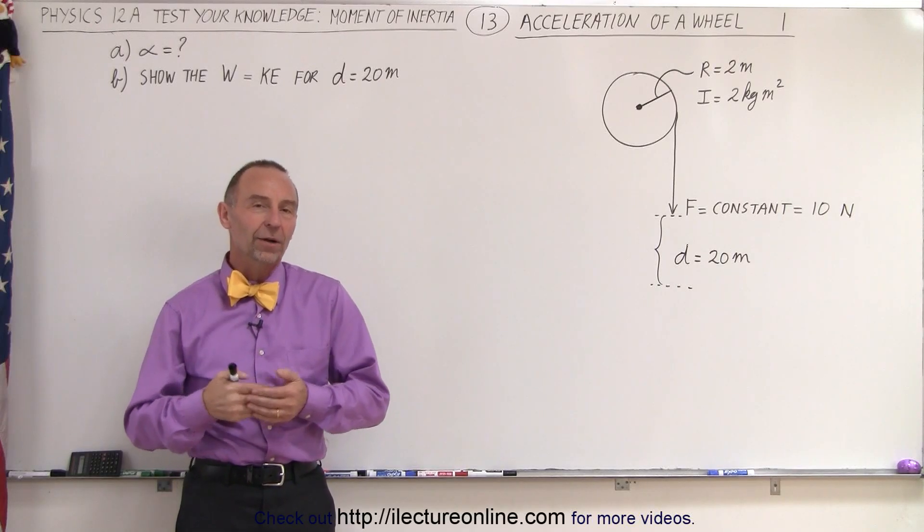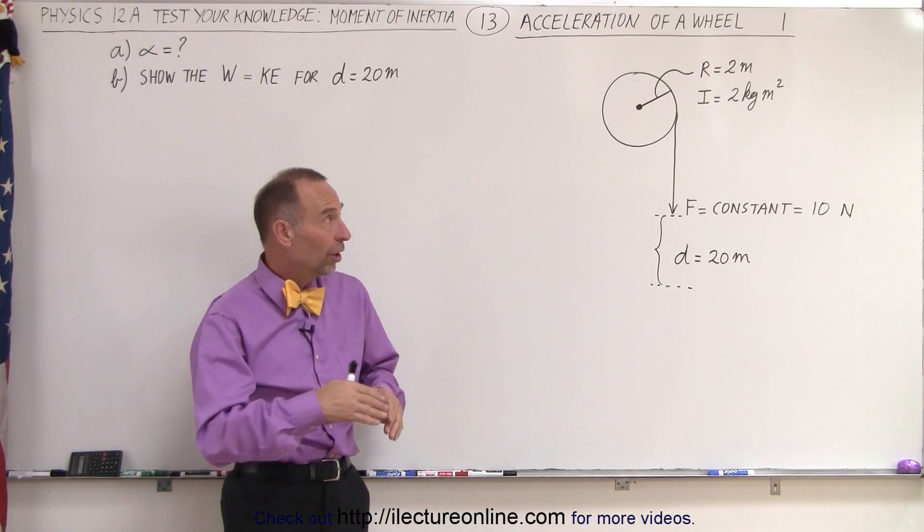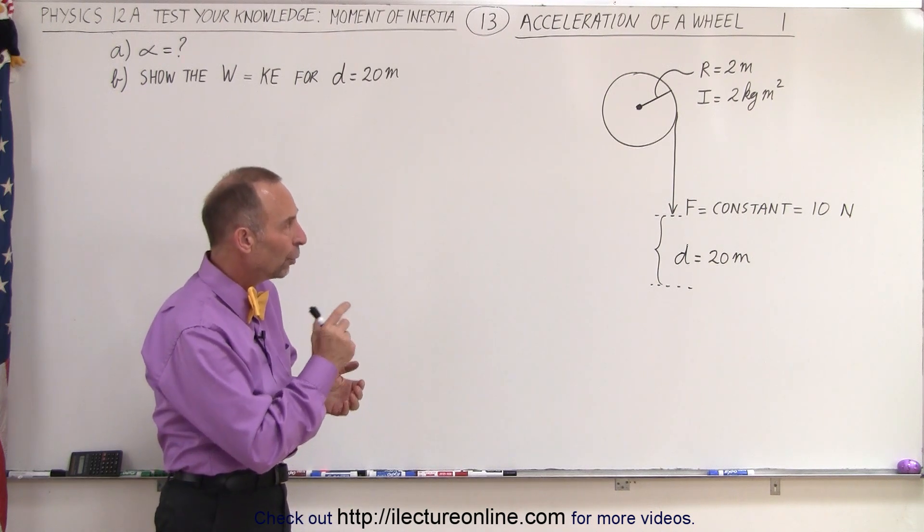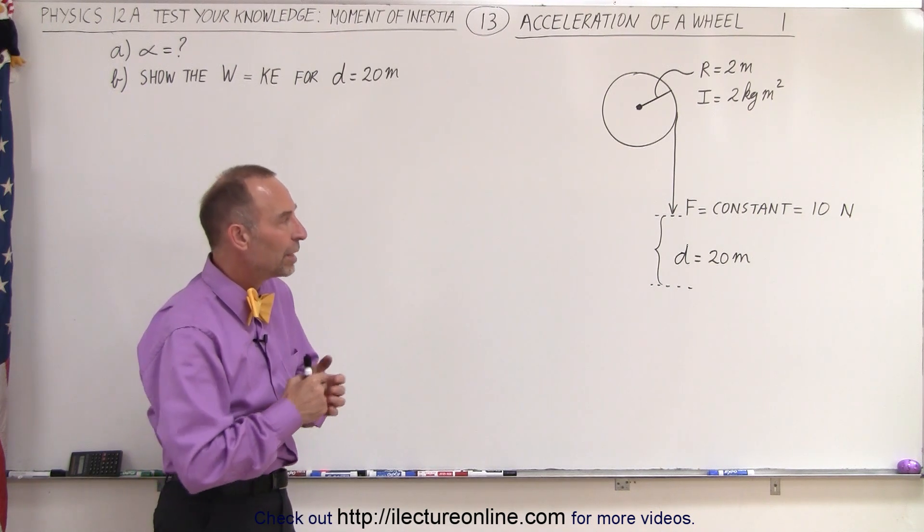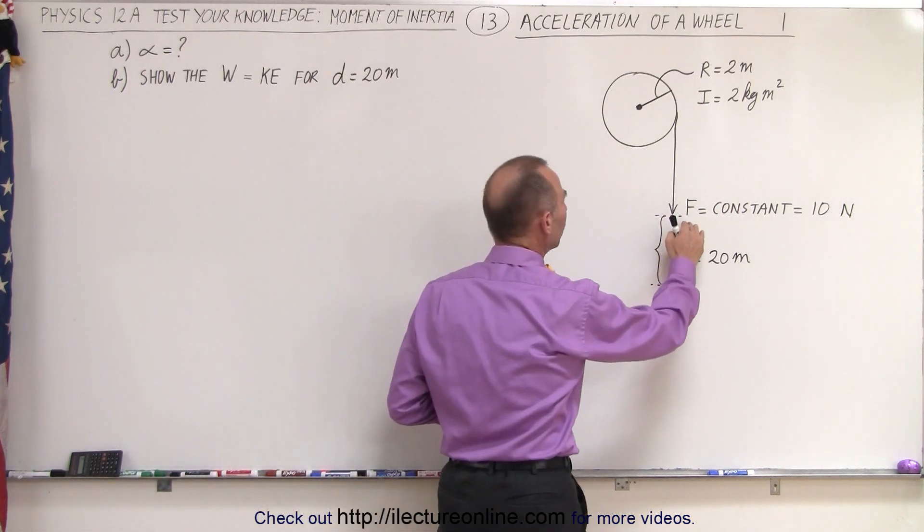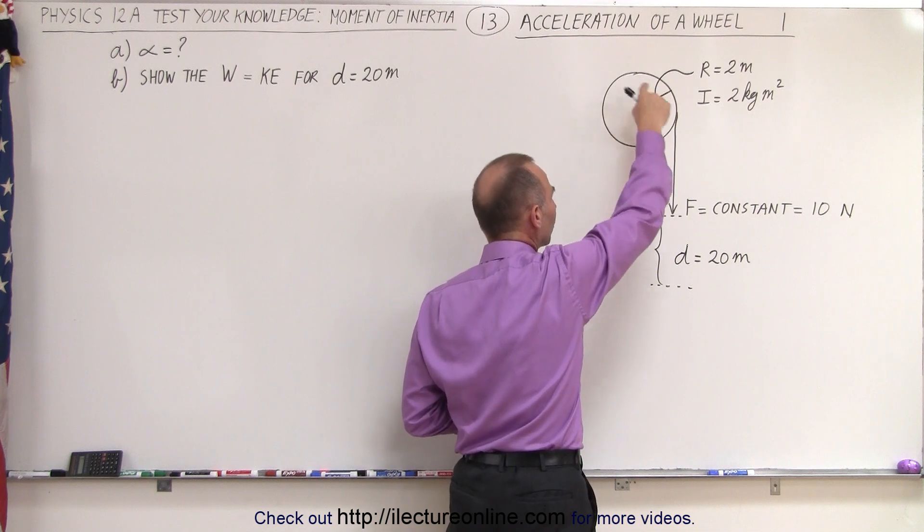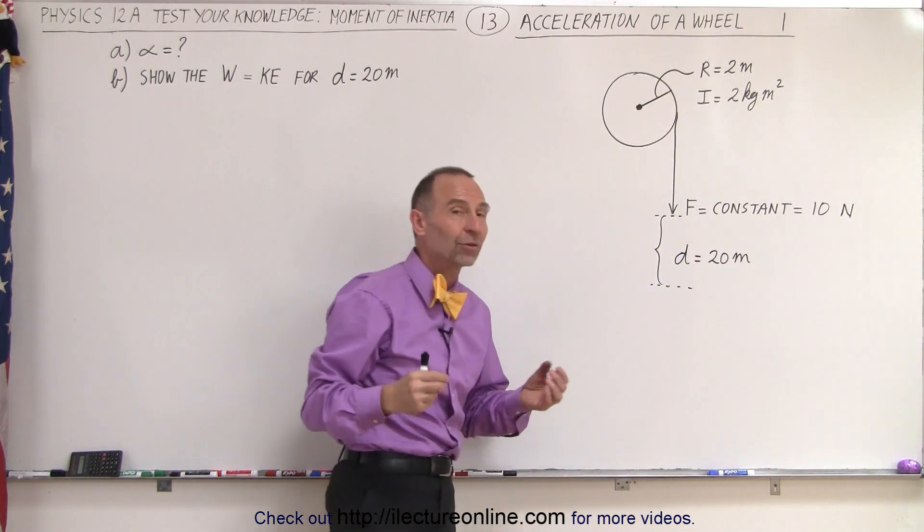Welcome to our lecture online. Our next problem involves a disc that has a moment of inertia of 2 kilogram meters squared and a radius of 2 meters. We now apply a constant force on a string which is wrapped around the disc, and so the disc is going to experience an angular acceleration.